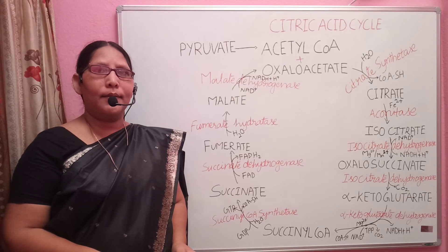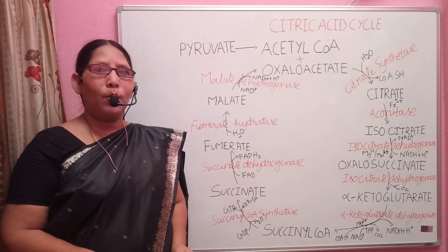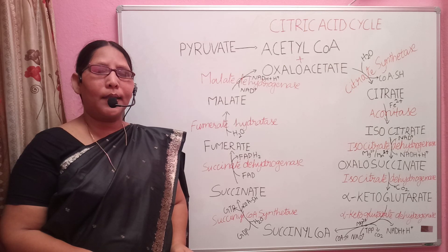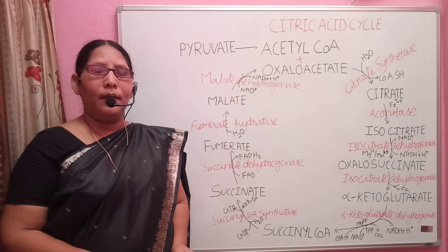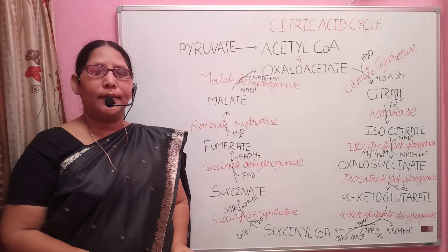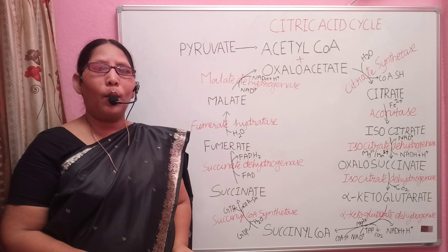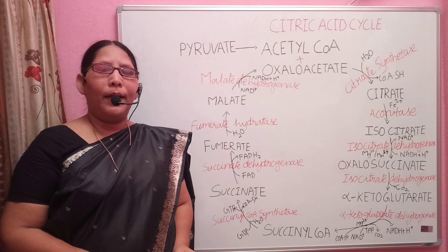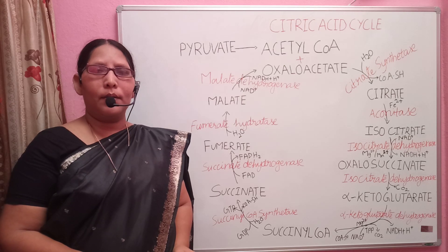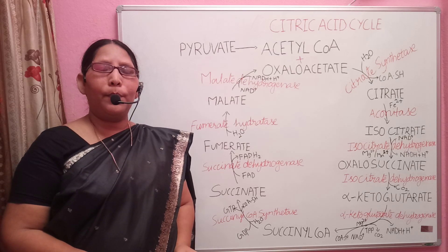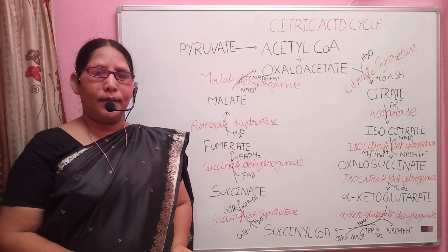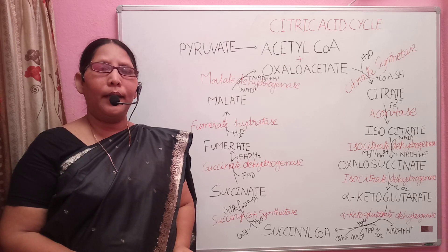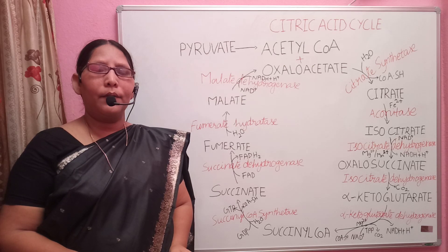Today's topic is the citric acid cycle. It is also called as TCA cycle or Krebs cycle. It is called the TCA cycle because the first two intermediary products contain three carboxylic groups. It is called the Krebs cycle because it was proposed by the German-born British scientist Sir Hans Adolf Krebs in the year 1937. For his contribution, he received the Nobel Prize in the year 1953.